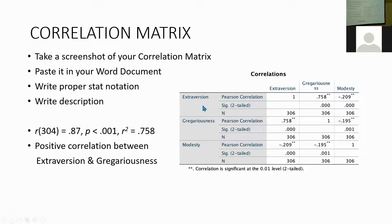After you have the notation, you would just indicate — for example — this is a positive correlation between extraversion and gregariousness. And then when you're reporting the stat notation for your second variable, you would indicate this is a negative correlation between extraversion and modesty.